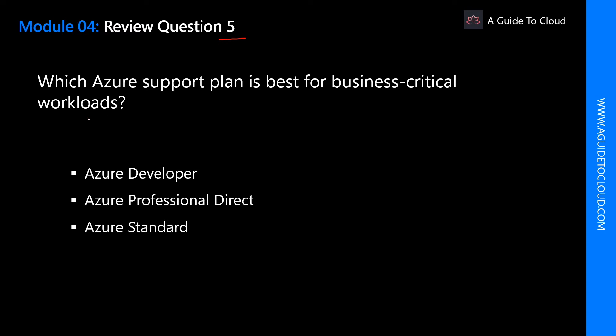Which Azure support plan is best for business-critical workloads? The best plan for business-critical resources is Azure Professional Direct — it is the best way to ensure your solutions are running nearly all the time. Note: Microsoft has removed the support module from the new AZ-900 exam course material, so it is unlikely you will get any questions on the support module.